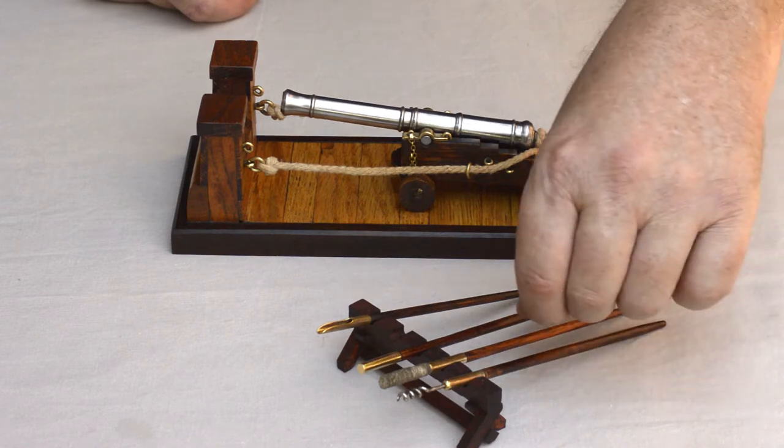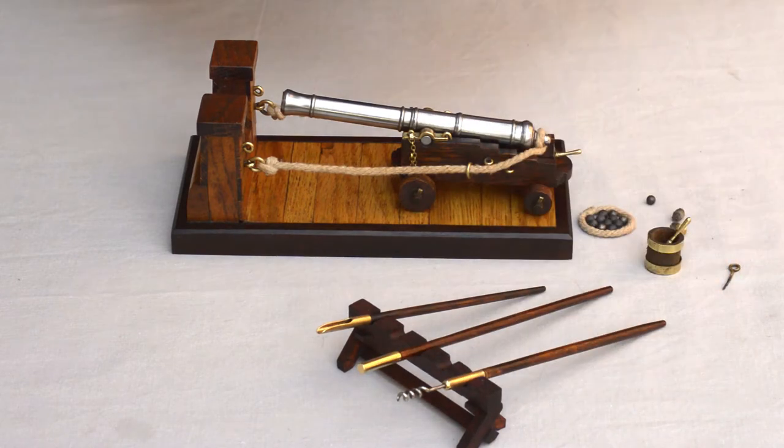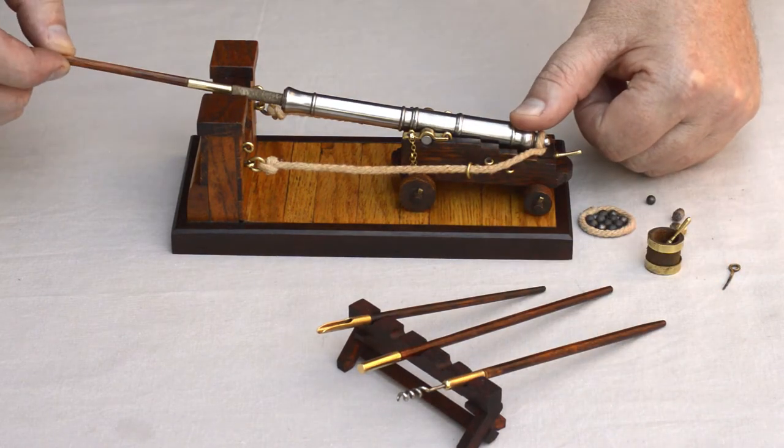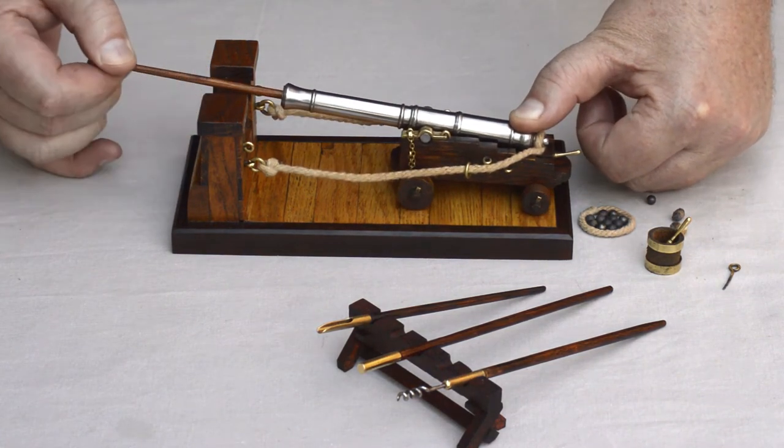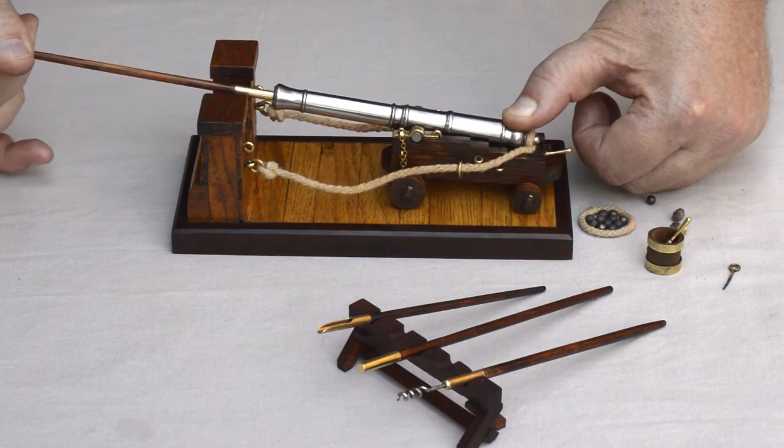Once the worming is completed, the gun will be sponged or swabbed by using a thoroughly wetted sponge, which will finally extinguish any smoldering remnants remaining in the gun barrel.